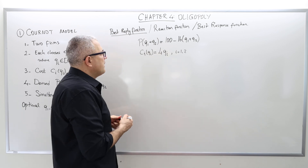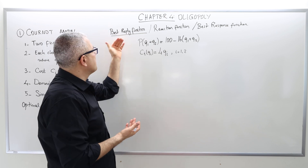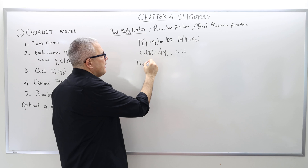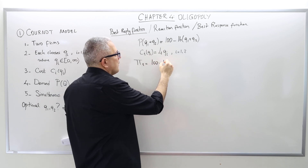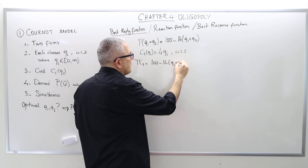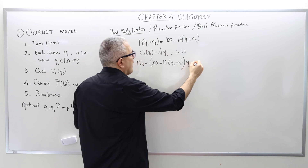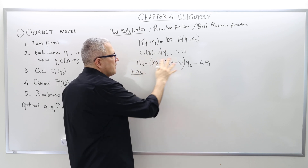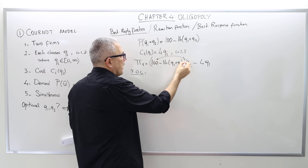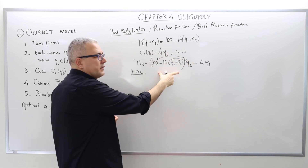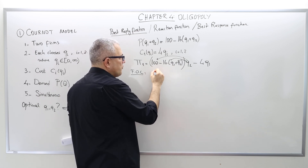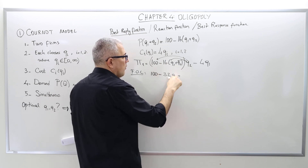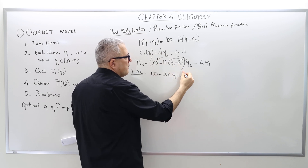Our purpose is to find the best response functions, also called best reply functions or reaction functions. The profit function for firm one is the price — which is 100 minus 16(q1 plus q2) — times quantity q1, minus cost for q1. The first-order condition means taking the derivative with respect to q1, remembering to distribute q1 over the parenthesis. The derivative gives us 100 minus 32q1 minus 16q2.